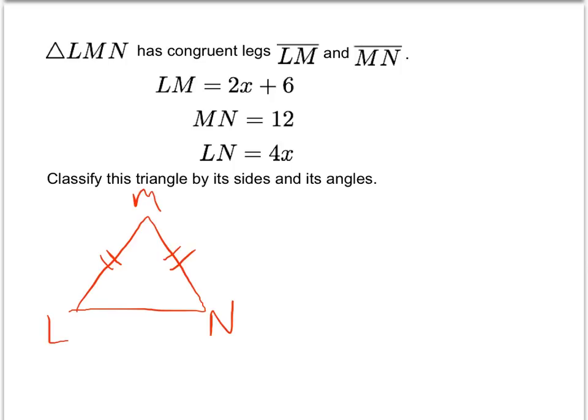Furthermore, we also know that the side lengths: LM is 2x plus 6, MN is 12, and LN is 4x.